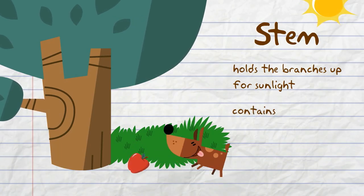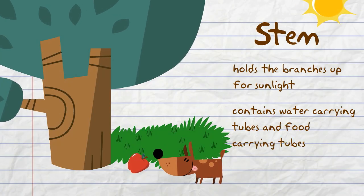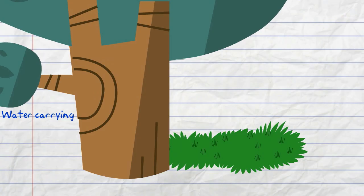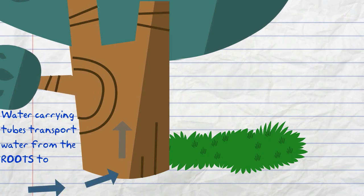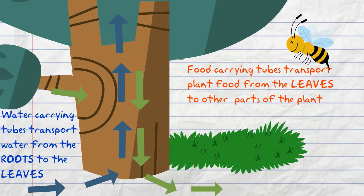The stem also contains water carrying tubes and food carrying tubes. The water carrying tubes transport water absorbed by the roots to the other leaves. The food carrying tubes transport plant food produced at the leaves to the other parts of the plant.